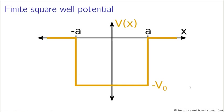The potential we're going to look at is defined like this. There's some region from minus A to A where there is a well in the potential — some negative V-naught value for the potential. In regions outside, where x is greater than A or less than minus A, the potential is 0.